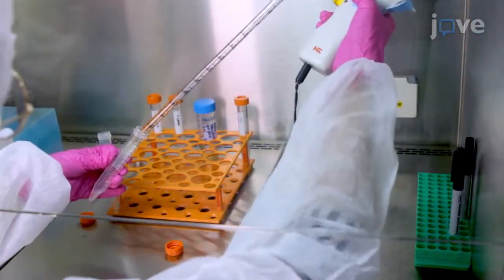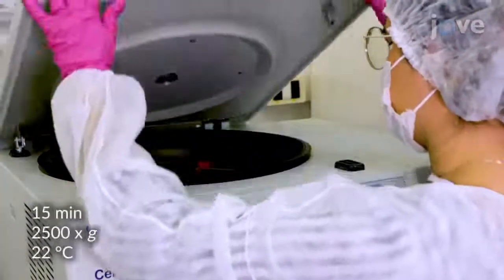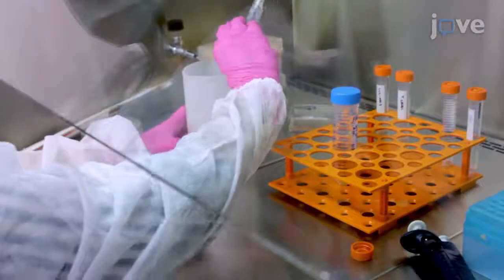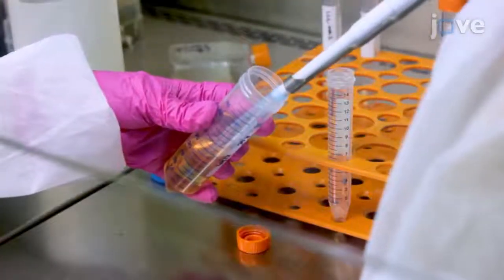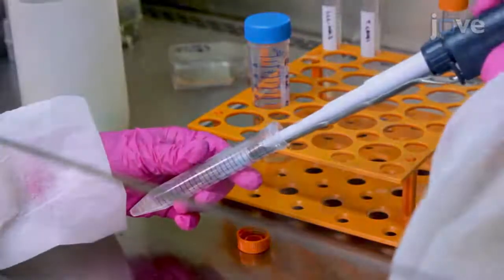collect the supernatant in a new conical tube, then centrifuge the sample and discard the supernatant, before re-suspending the pellet containing the parasites in complete RPMI medium.